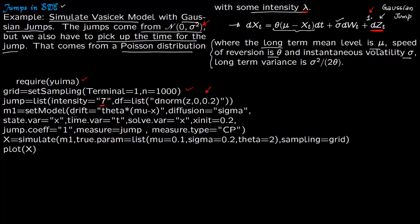So again you set the model. You have the drift theta times mu minus x. You have the diffusion which is sigma. So this is your drift, this is your diffusion. Your state variable is x. Your time variable is t. You are going to solve for x. I am taking the initial value as 0.2. The jump coefficient is 1. So this is the jump coefficient 1 times dZ_t.